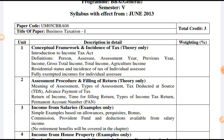Number 4 under deemed assessee: legal guardians or managers entitled to receive income on behalf of a minor, lunatic, or idiot. And last, courts of wards — that is, official trustees and receivers — who are entitled to receive income on behalf of any other person.